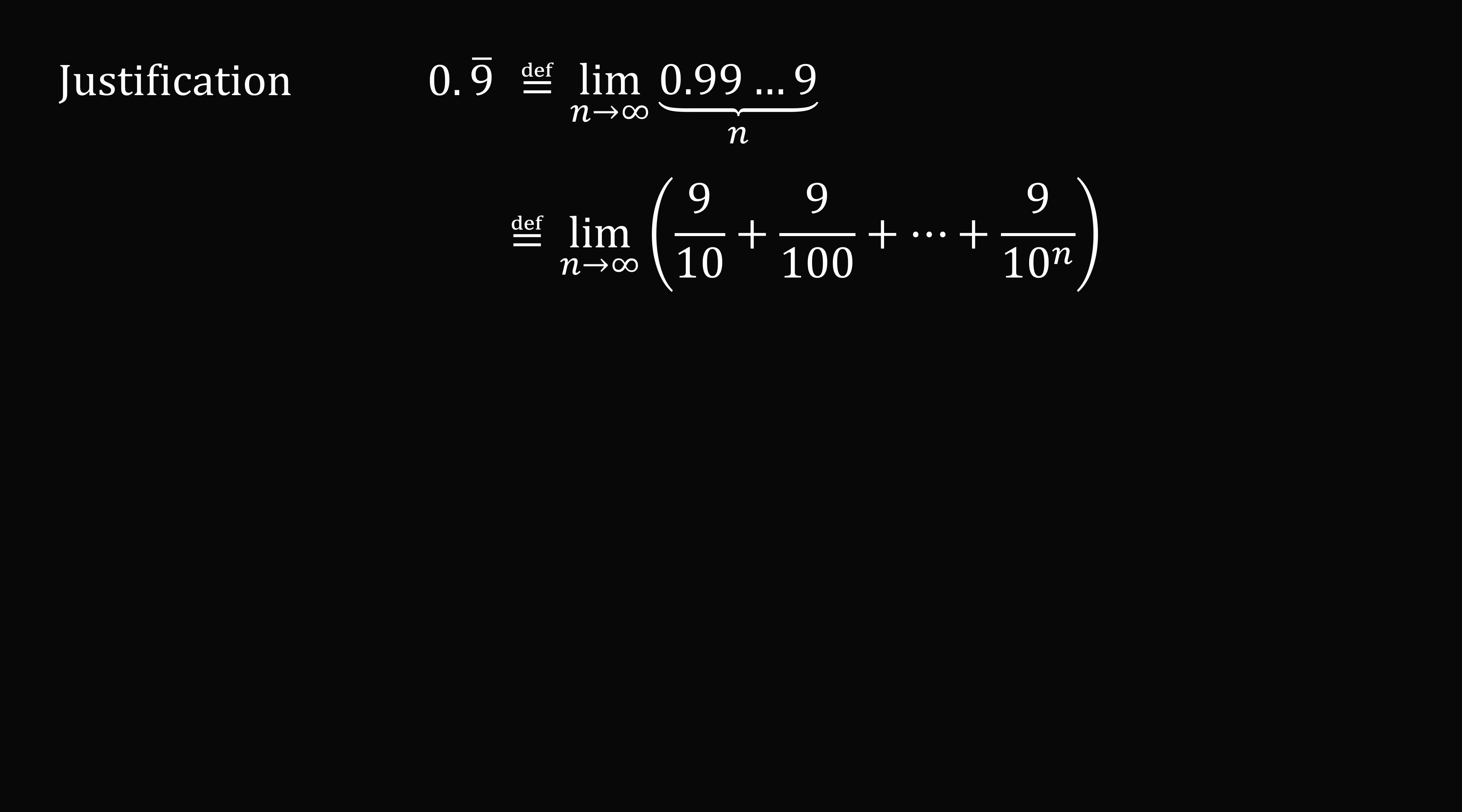Now we can also write it in the following way. We have a sum of 9 over 10 plus 9 over 100 plus so on to 9 over 10 to the power of n. We take the limit as n goes to infinity of this geometric sum. Now you'll notice this sum is 1 over 10 to the n less than 1. So this is equal to the limit as n goes to infinity of 1 minus 1 over 10 to the power of n. We can write this as 1 minus the limit as n goes to infinity of 1 over 10 to the power of n. This limit will go to 0. So this is equal to 1 minus 0. And this is equal to 1. Therefore, 0.9 repeating is equal to 1.